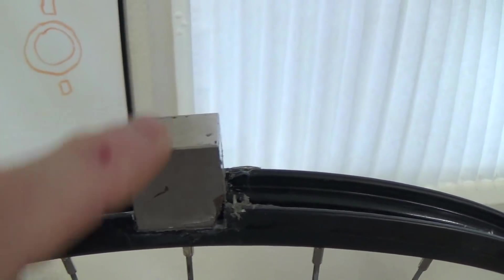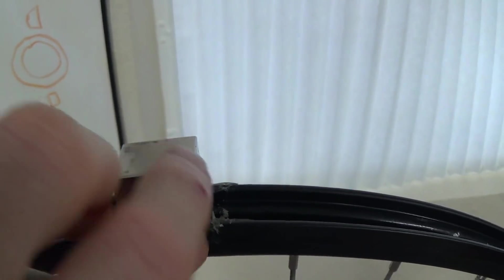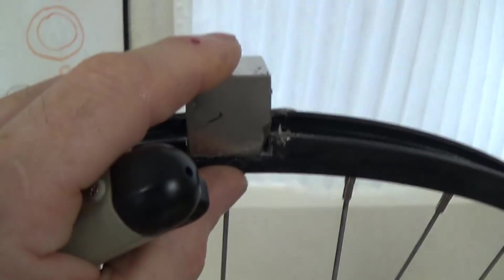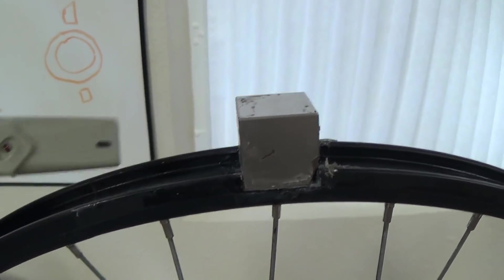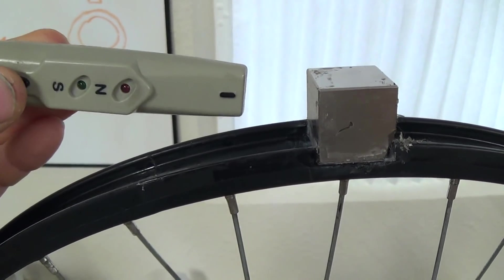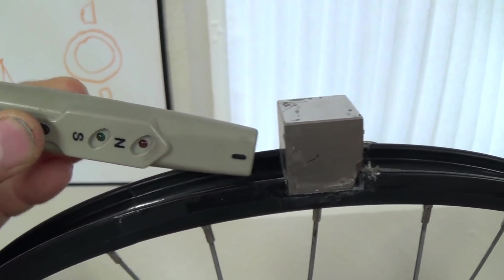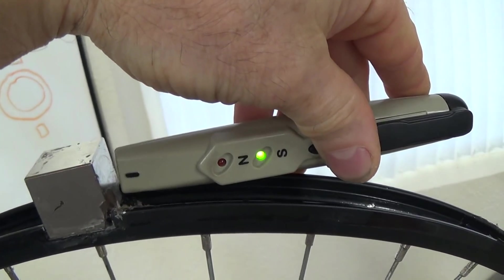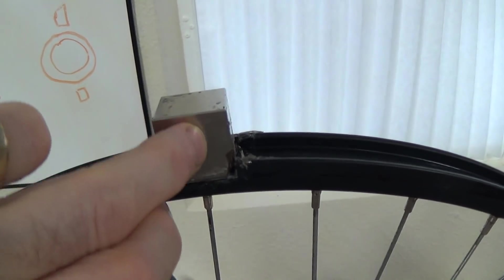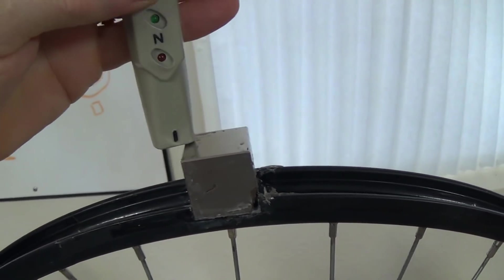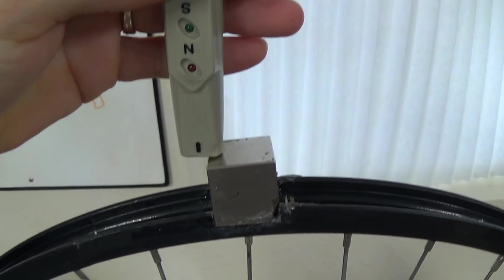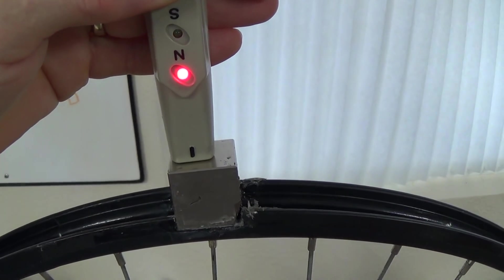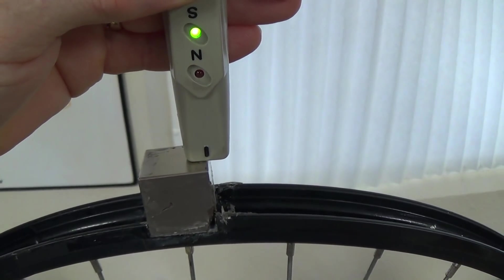So basically you have a north pole on that side and a south pole on that side, so your Bloch wall between the two poles is in the center here. Again here at the top of the magnet you will have both north pole changing over to a south pole.